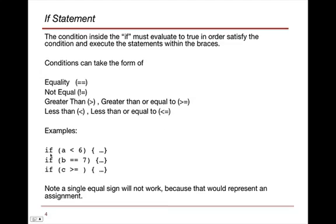Here are some examples. If A is less than 6, we test the condition and execute the statements inside the braces. If B equals equals 7, we test that condition and execute the statements. If C greater than or equal to, there's a number missing here but this would have been 4. If this was the actual code, we would have gotten an error. Note, a single equal sign will not work because it represents an assignment.